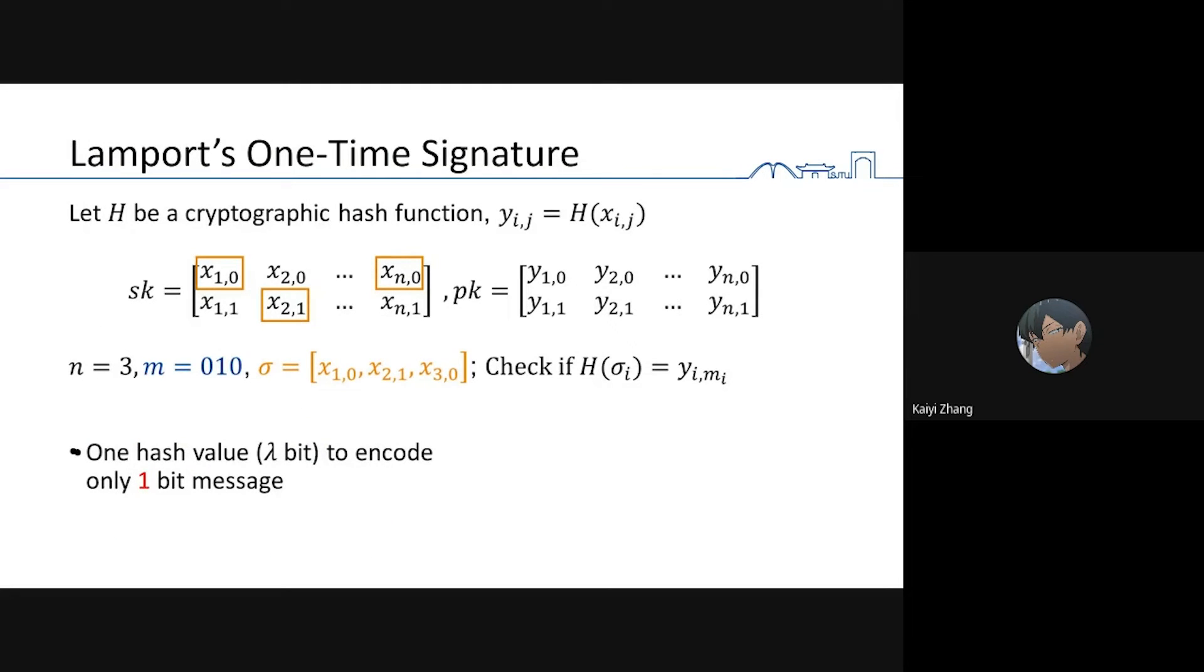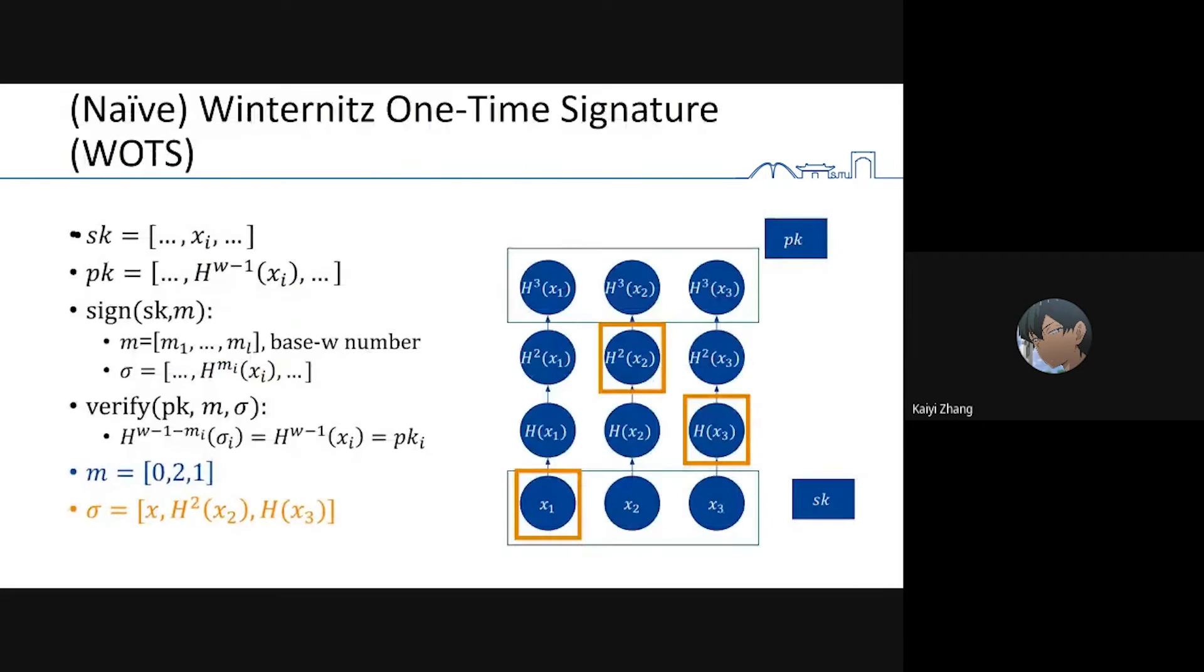Let's go back to Lamport's one-time signature. In Lamport's one-time signature, we encode only one bit message by one hash value, which is lambda bits. Lambda is a security parameter. This is inefficient. So in order to improve it, Winternitz proposed Winternitz one-time signature. Let's first consider the naive version.